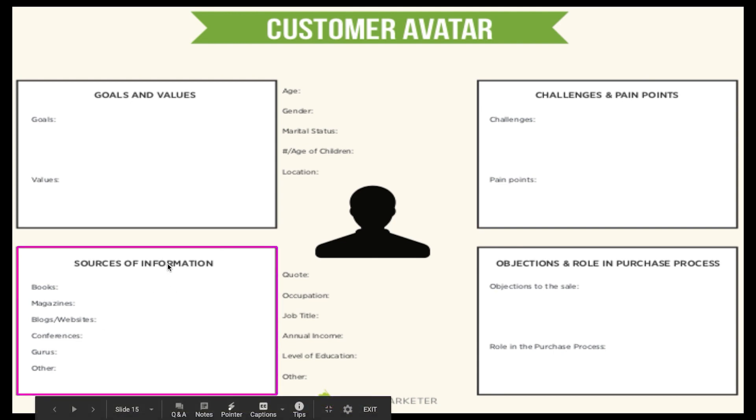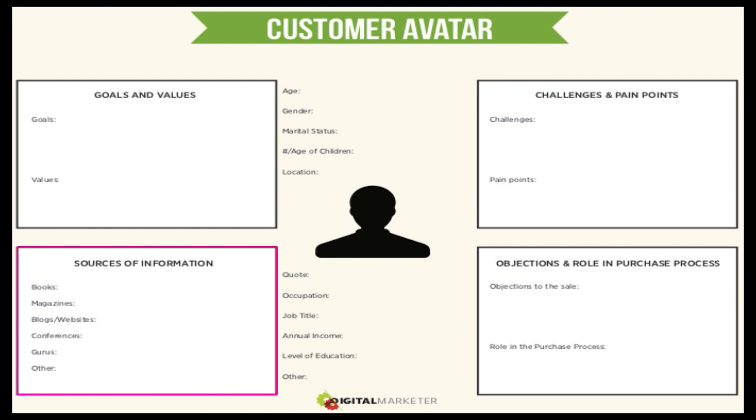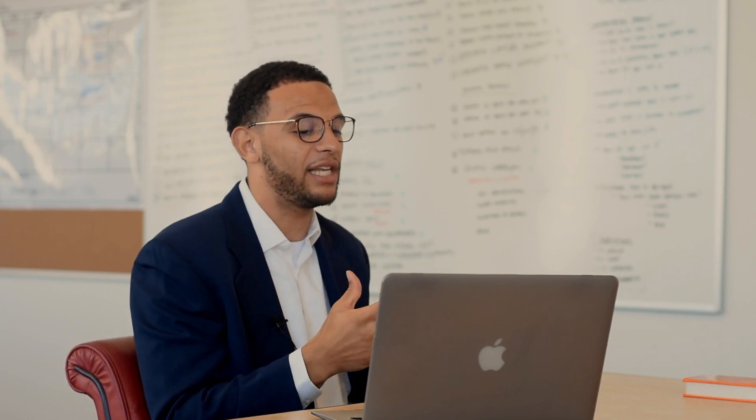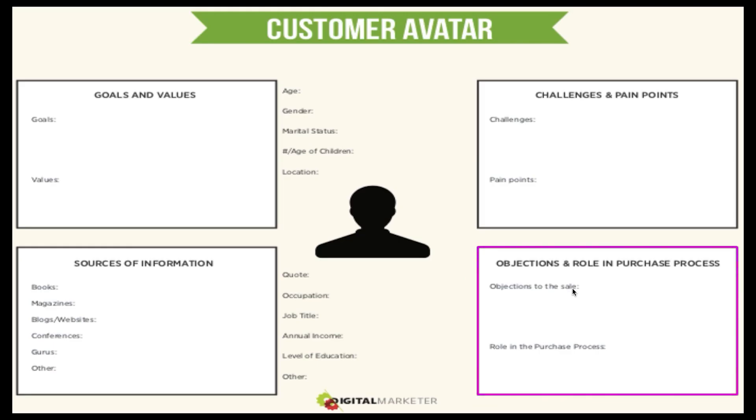Sources of information — what are the books they like to read? The magazines? The blogs and websites they visit? The conferences they attend? Who are their gurus? When we know these things, we know what they're reading and what they love. We're actually able to use communication that's similar to what they're already interested in. If you know a magazine or book they love, communicate the same way it does. If you know the blogs and websites they're on, why not put ads on those blogs and websites?